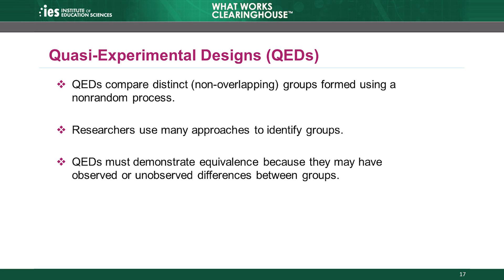Another research design eligible for review under WWC group design standards is a quasi-experimental design, or QED. Quasi-experimental design is one of those terms that means different things to different people, but the WWC has a specific definition. A quasi-experimental design is a study design that has at least two distinct, non-overlapping groups and did not use a purely random process to form the groups. A simple QED identifies a group of units that received an intervention and compares that group to a group of units that did not receive the intervention.